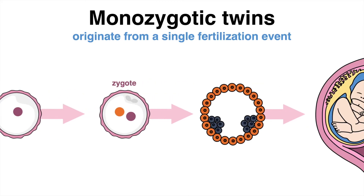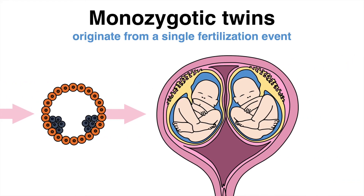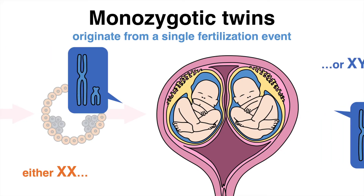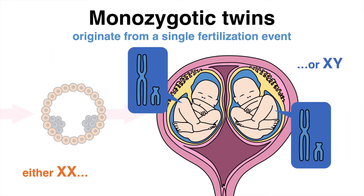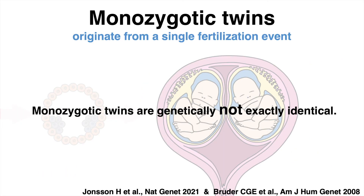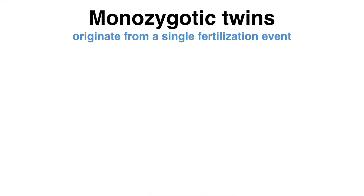The result is that the twins share the same set of genes, and as the sex chromosomes are also identical, the twins have the same sex. As a short note, nowadays researchers have demonstrated that monozygotic twins are genetically not exactly identical — mutations appear to occur at a very early stage, and thus the DNA is not as similar as previously thought.